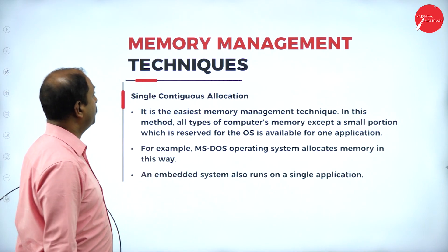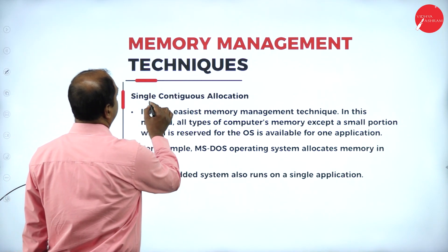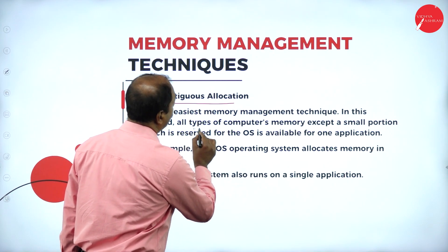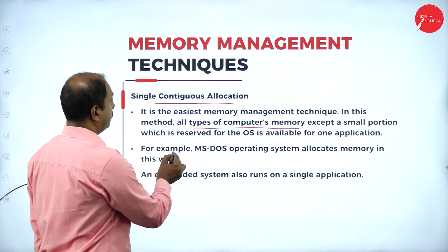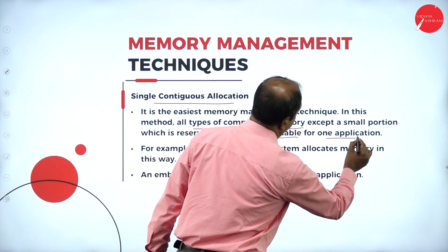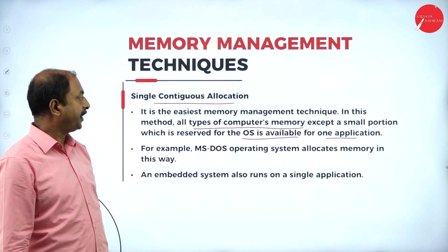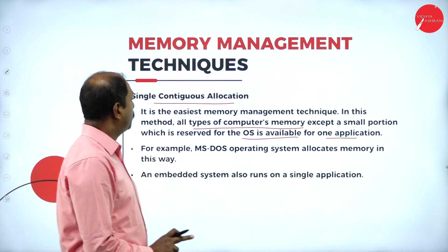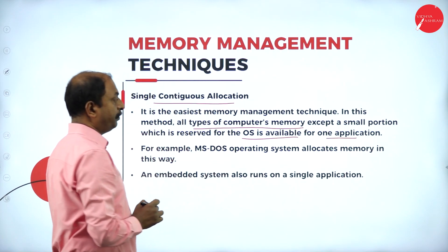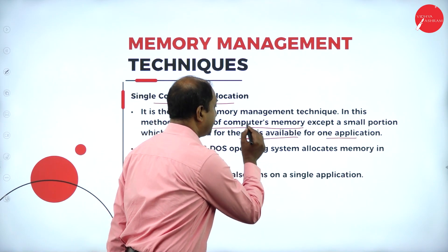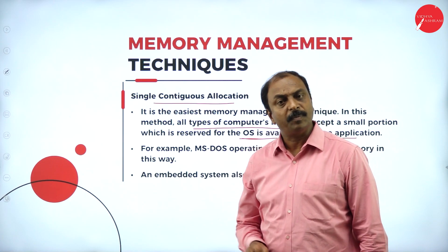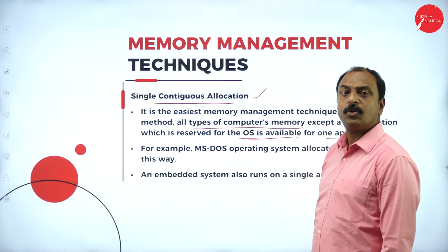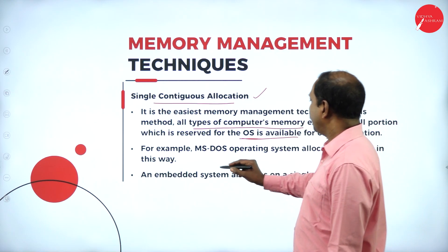Now let us see what are the different memory management techniques. The first one is single continuous allocation. It is the easiest memory management technique. In this method, all types of computer memory, except small portions reserved for the OS, are available for one application. All programs, data, and information, even including the operating system, will be stored in computer memory in a continuous, definite order. An example is MS-DOS, Microsoft Disk Operating System.